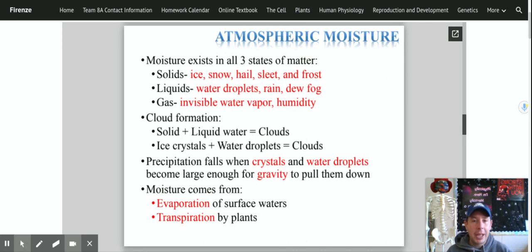Transpiration is the water vapor given off by plants. Plants give off water too. They go through photosynthesis. Remember, they have pores. They drink water from the roots. The water goes up through the stem into the leaves, and then it goes out of the leaves through the pores in the leaves. So moisture goes into the air in those two different ways.